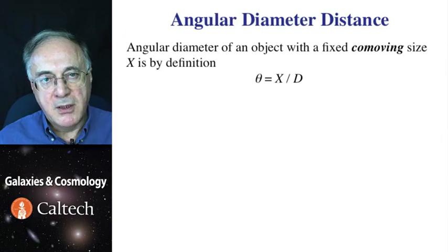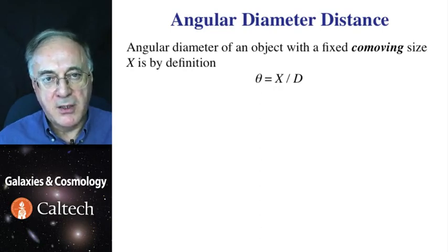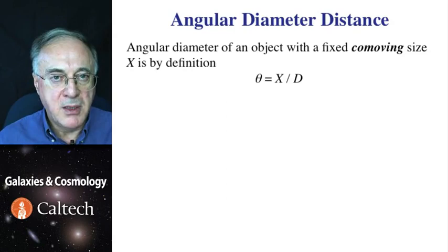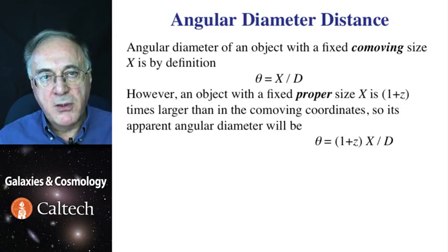The other kind of thing that we can measure is the angular size of things. Imagine if you had a standard gigantic ruler that you can view at different redshifts from us. Then, its angular diameter will tell us how far we are for a given cosmology. In a simple Euclidean non-expanding space, that angle will be the size of the ruler divided by the distance.